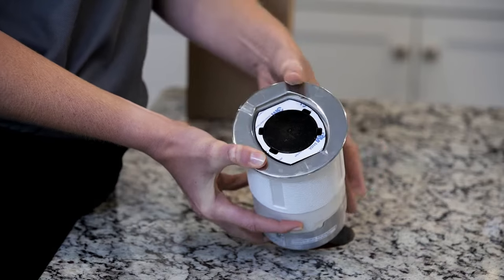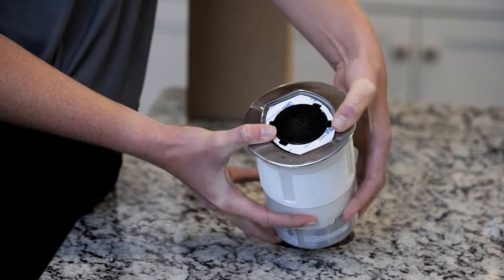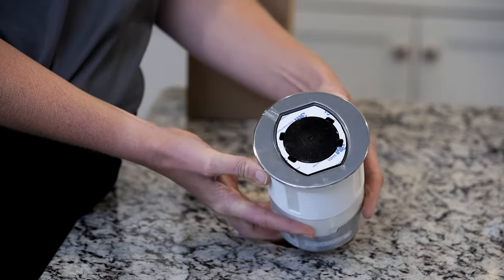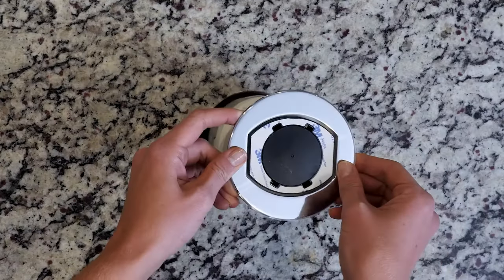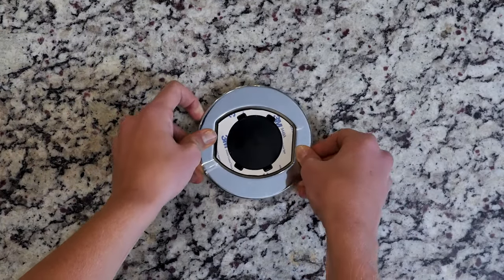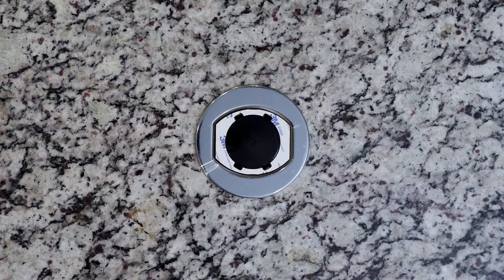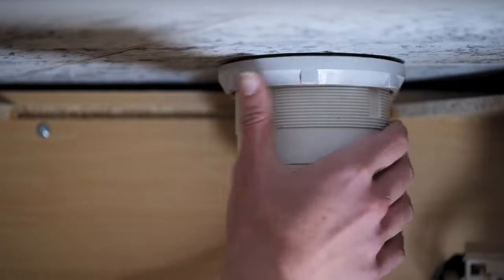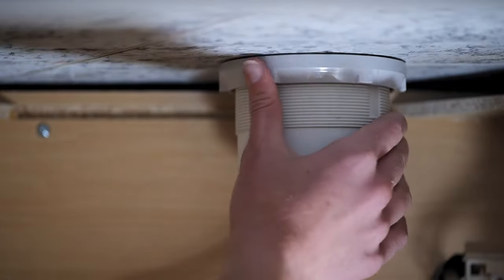Select the finish color that you want to use and attach it. Insert the device into the countertop opening. Hand tighten the lock nut to secure the device in place.